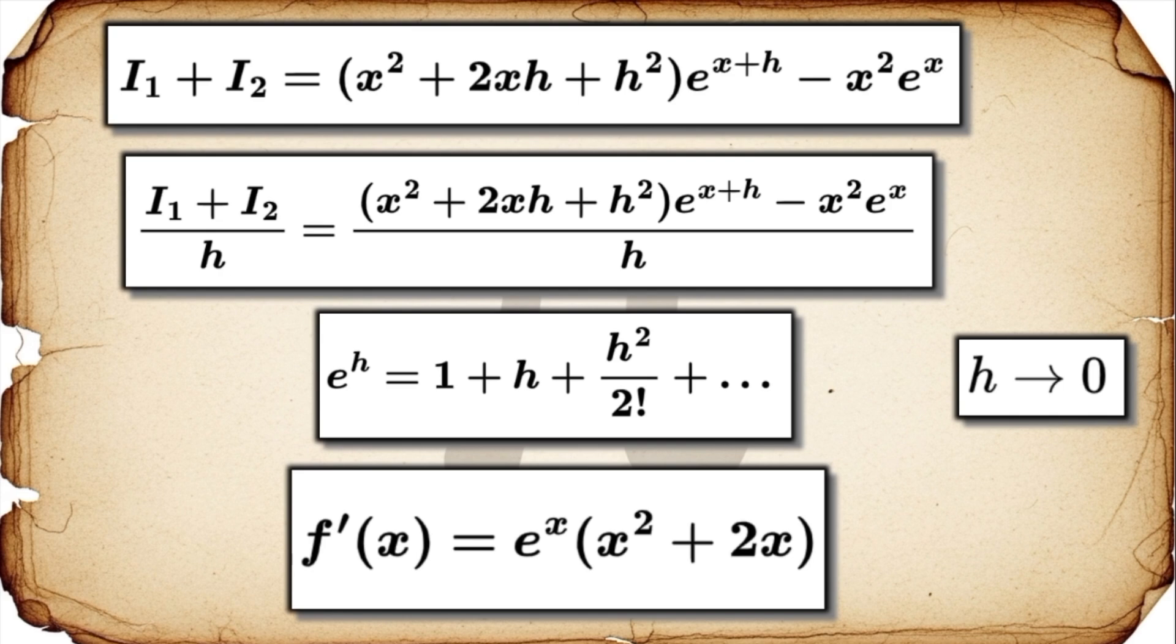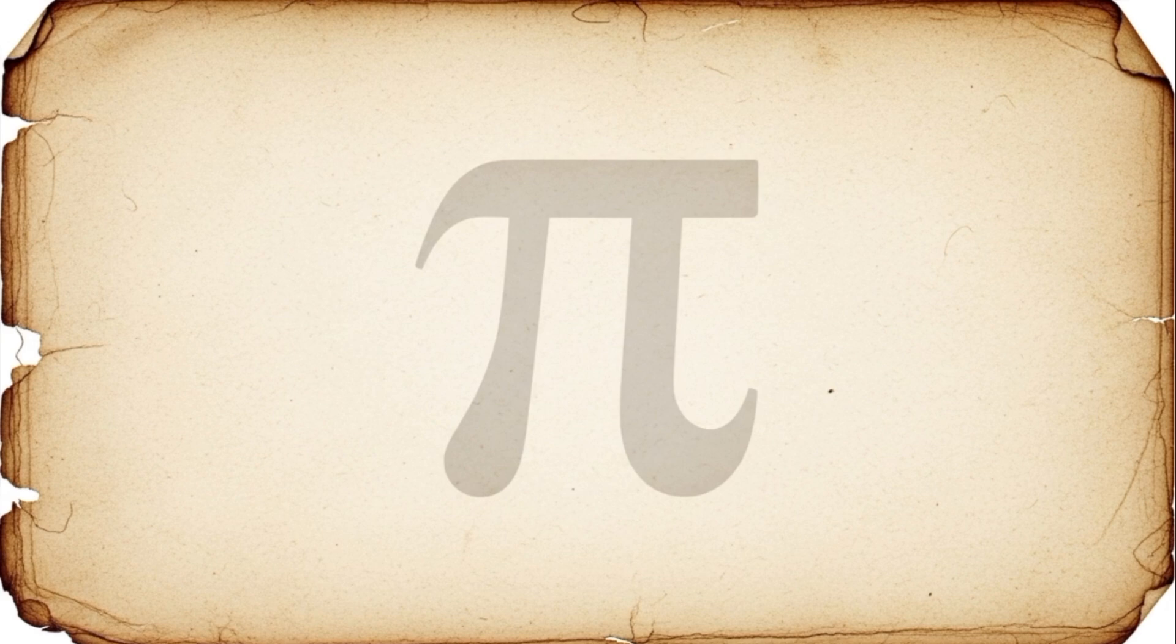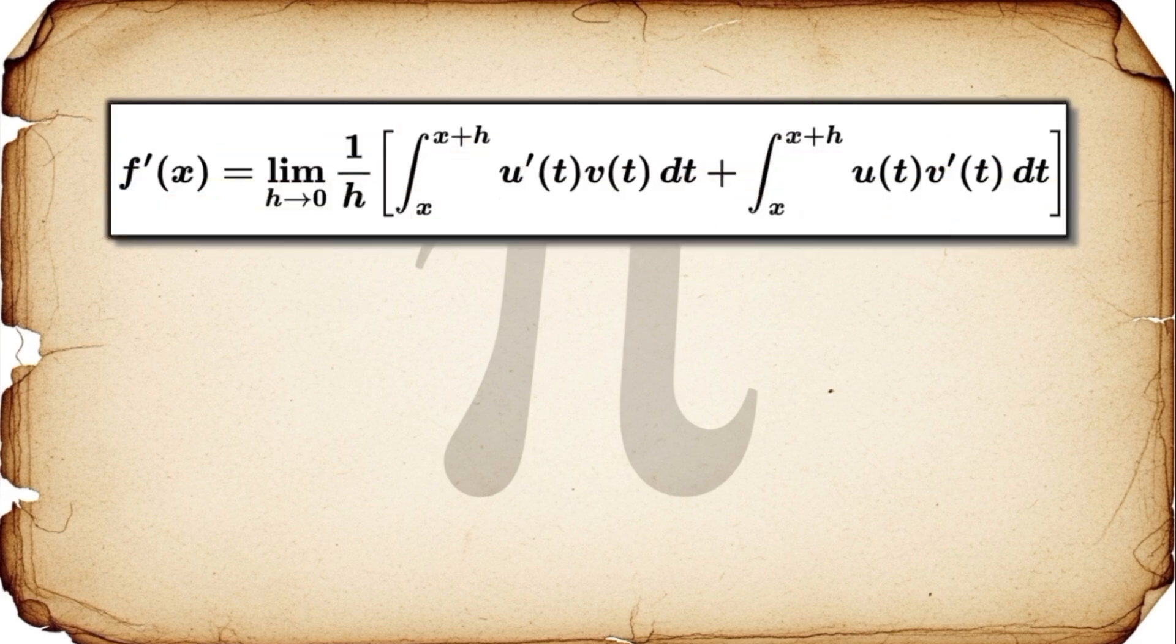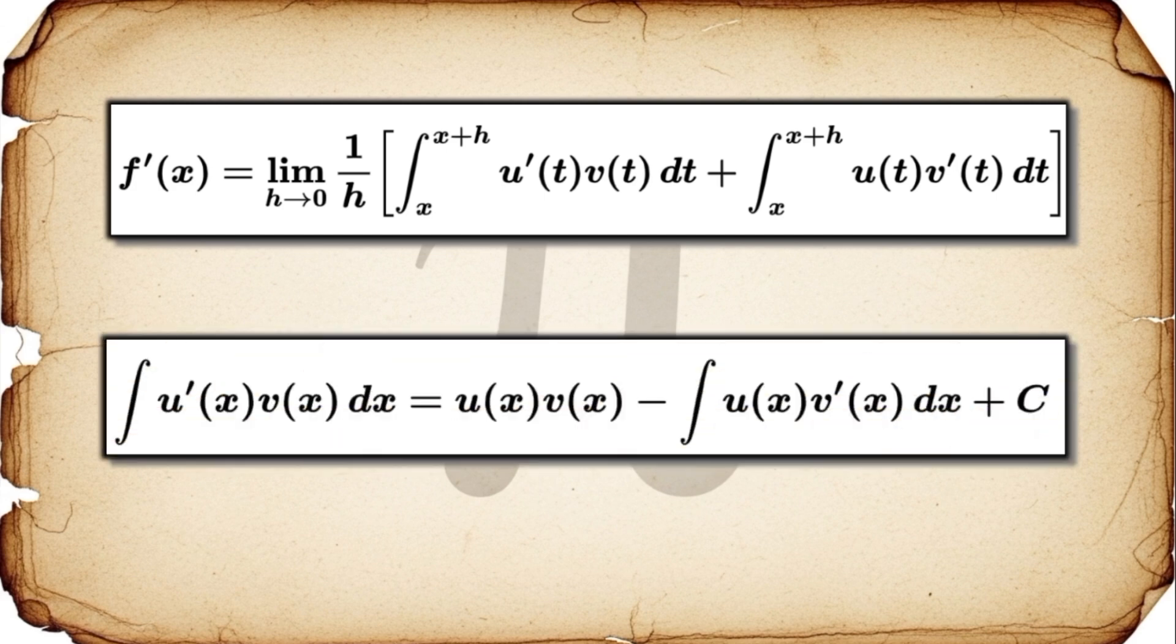So this new definition is clearly more than just a party trick, right? It's not just some complicated way to get the same answer. It's a robust alternative starting point. You could almost think of it as a new foundation from which we can build some of the other major ideas in calculus. And this is where it gets truly mind blowing. If we take that averaged form of the product rule we just used, and we essentially reverse the process, we integrate both sides, we do some careful manipulation, we can actually derive the entire formula for integration by parts. It's not some separate rule you have to memorize. It's a direct consequence that emerges from this same foundational idea.